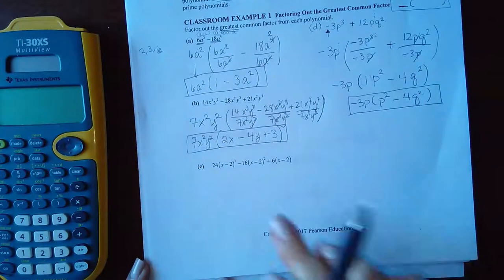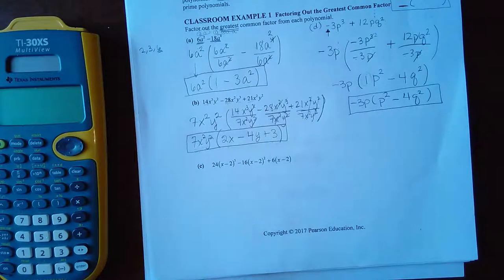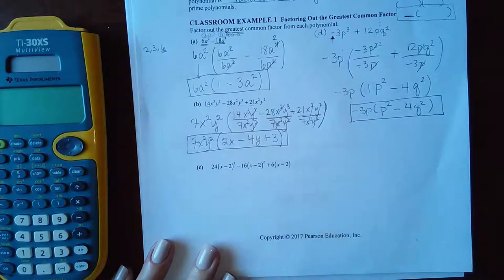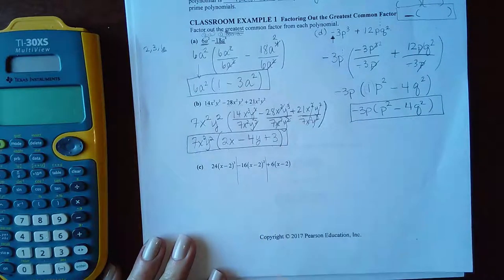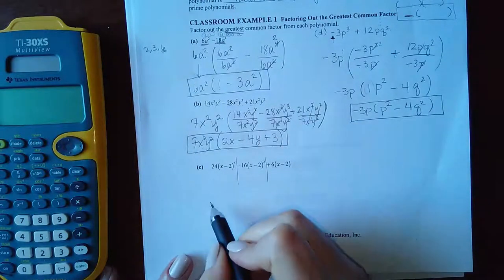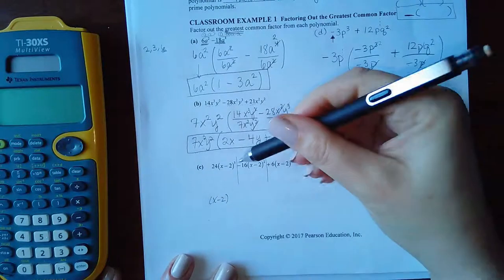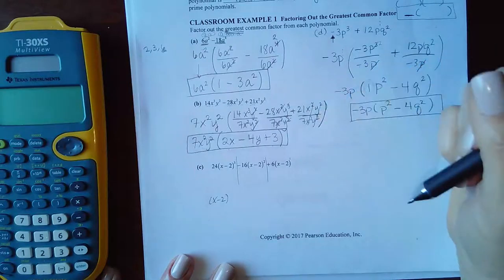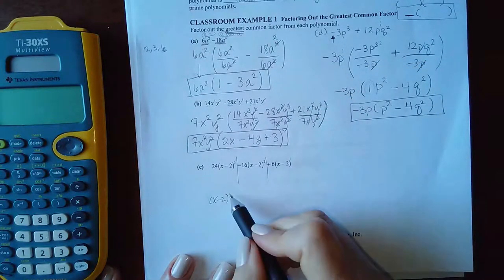For product C down here, they've already identified part of the common, the GCF. Notice that every single one of these terms, and this is a term and this is a term. So every single one of those terms has this X minus two in it. However, this one has three, this one has two, and this one only has one. So the most I could take from all of them is just one.